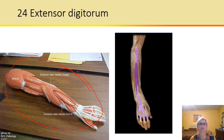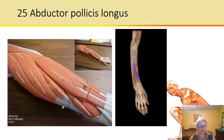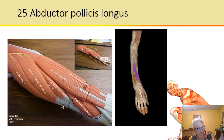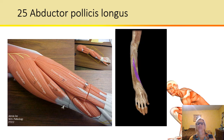All right, next we have the abductor pollicis longus — this is the long puller-away of the thumb. This abducts the thumb at the carpometacarpal joint. You don't need to know which joint that is, but it is going to abduct or take away the thumb.